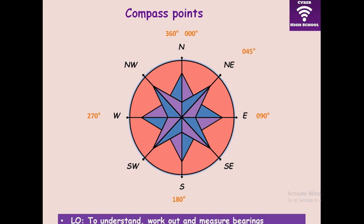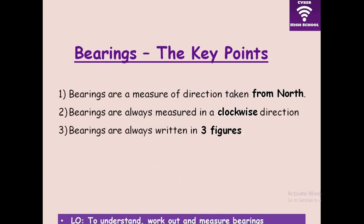The direction for northeast is 045 degrees, southeast is 135 degrees, southwest is 225 degrees, and northwest is 315 degrees. Important key elements for bearing: always measure bearing from the north, and bearing must be measured clockwise. Bearings are always represented in three figures — you should never forget these important concepts.